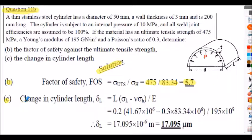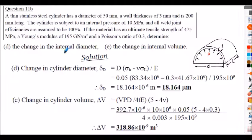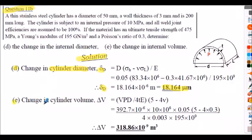Change in cylinder length: δL = (L/E)(σ_l − ν σ_h) = 17.095 micrometres. Change in internal diameter: δd = ε_h × d = 18.164 micrometres. Change in internal volume: ΔV = V × (pd/4tE)(5 − 4ν) = 313.86 × 10⁻⁹ m³. All very small dimensional changes as expected.